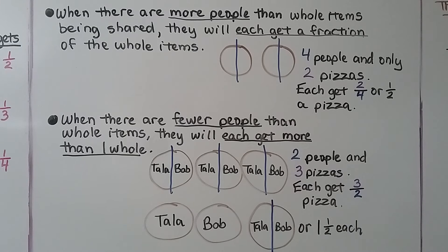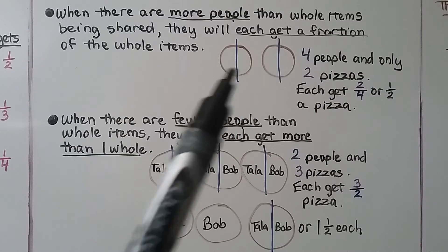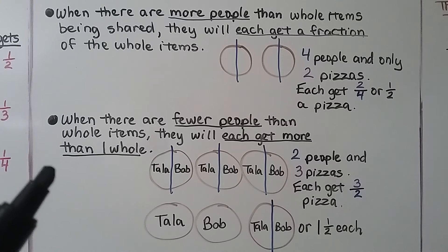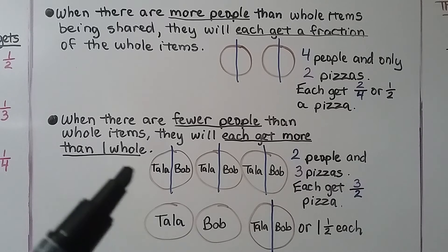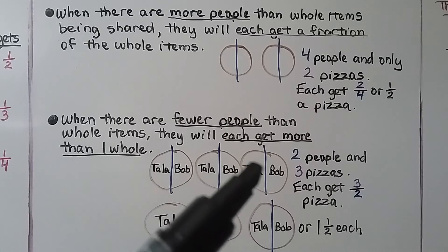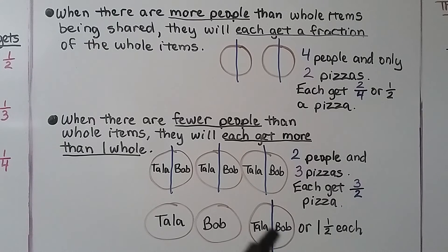When there are more people than whole items being shared, they will each get a fraction of the whole items. If 4 people are sharing only 2 pizzas, they'll each get 2 fourths, which simplifies to a half of a pizza. When there are fewer people than whole items, they'll each get more than one whole. With 2 people sharing 3 pizzas, each person gets 3 halves — or equivalently, 1 whole pizza plus half of the third pizza, which is 1 and 1 half.